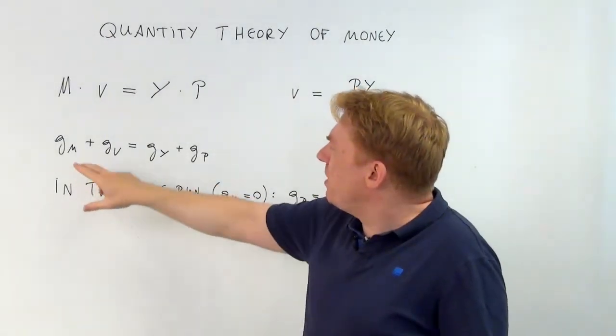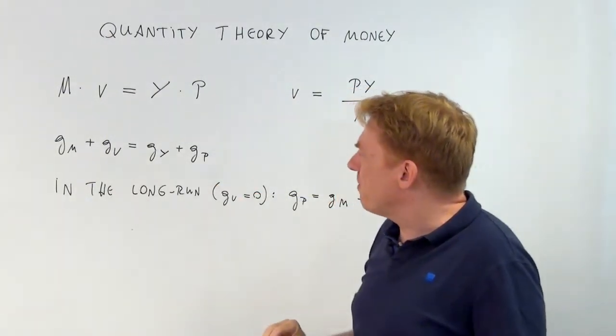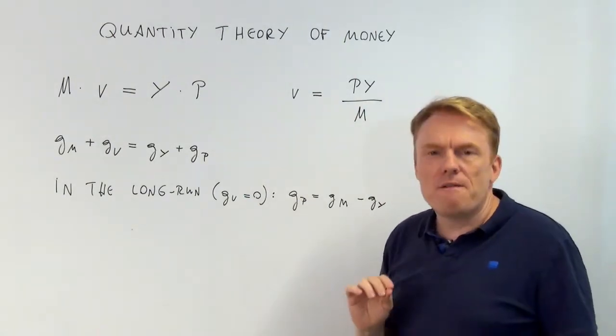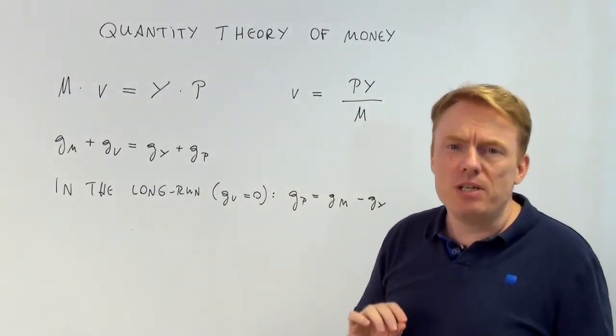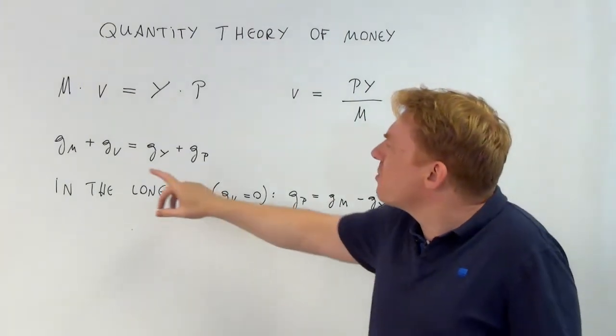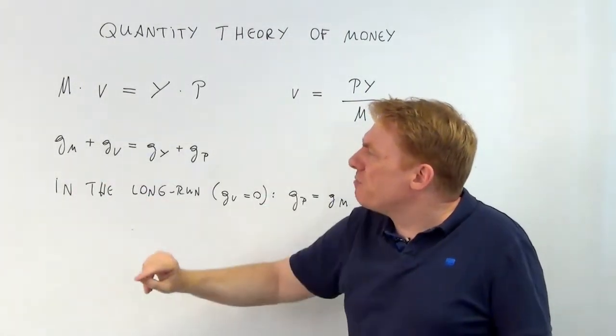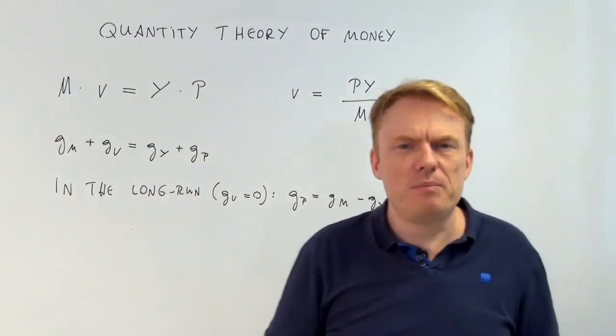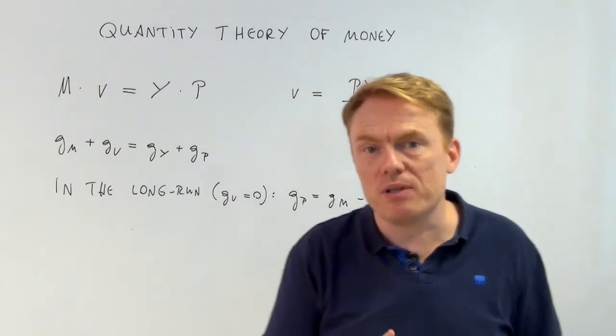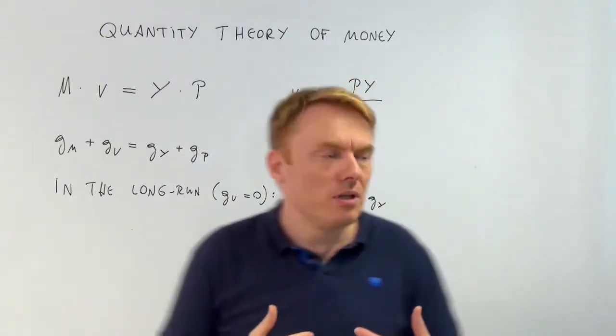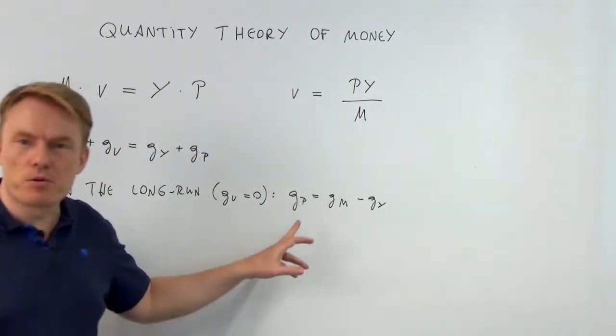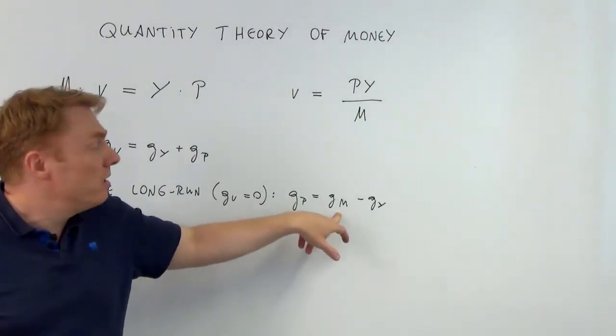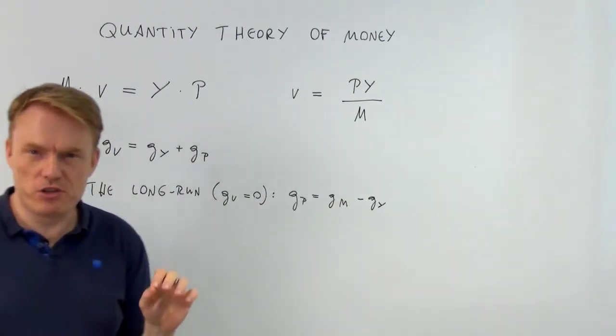So, as we set this equation, and as we know that in the long run the growth rate of velocity of money equals zero, we can say the growth rate of money plus zero equals the growth rate of real GDP plus the growth rate of price level. Which means, if we solve for the growth rate of price level, it is the growth rate of money minus the growth rate of real GDP.